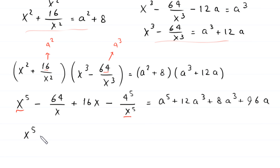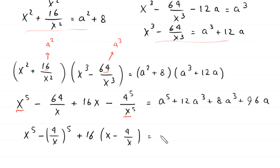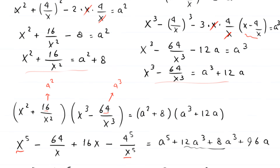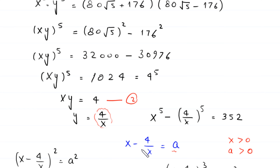We can factor the left side: x⁵ − (4/x)⁵ plus 16·(x − 4/x). Substituting back — x − 4/x equals a, x⁵ − (4/x)⁵ equals 352 — the left side becomes 352 plus 16a. So the equation becomes 352 plus 16a equals a⁵ plus 20a³ plus 96a.